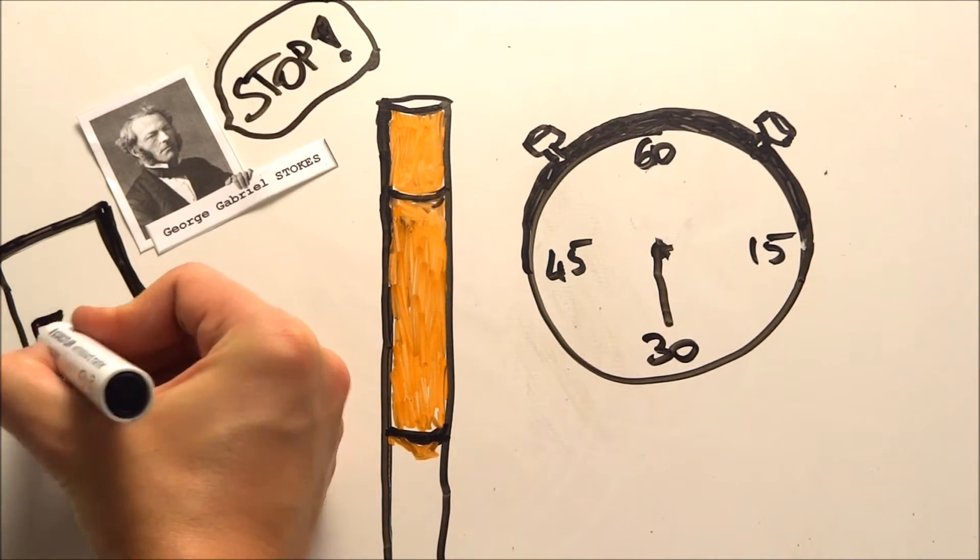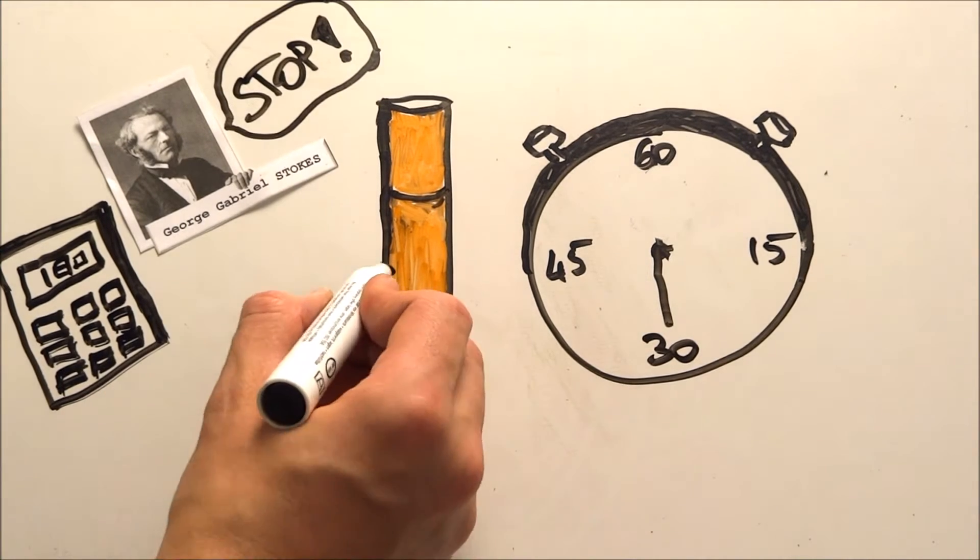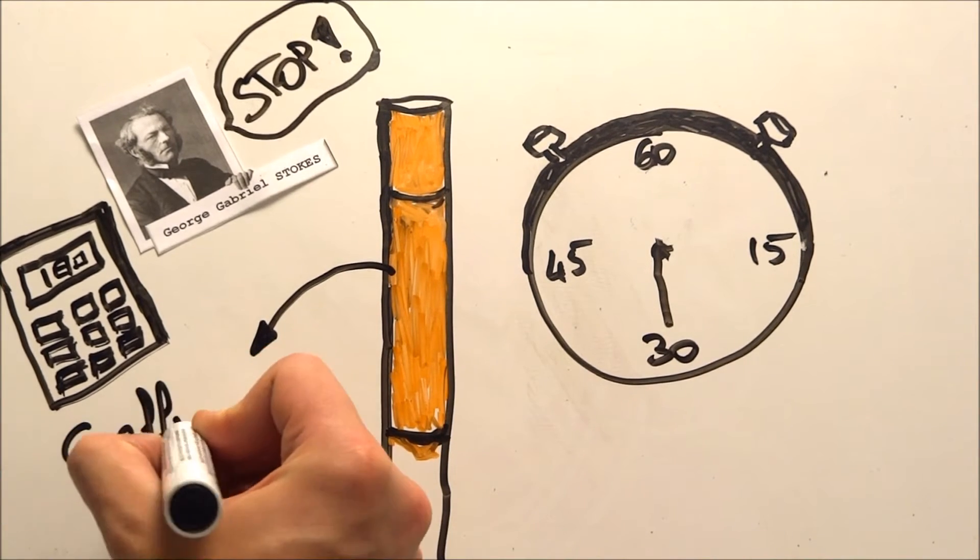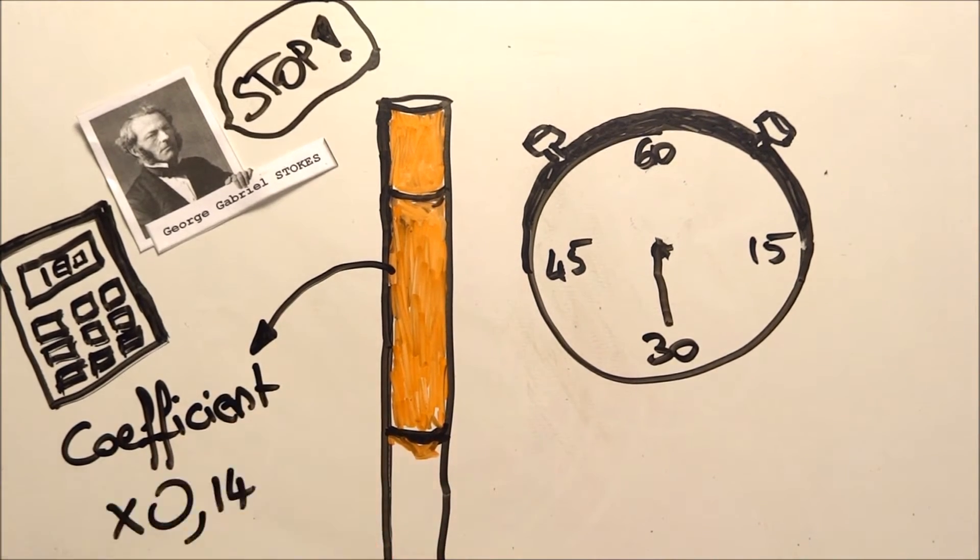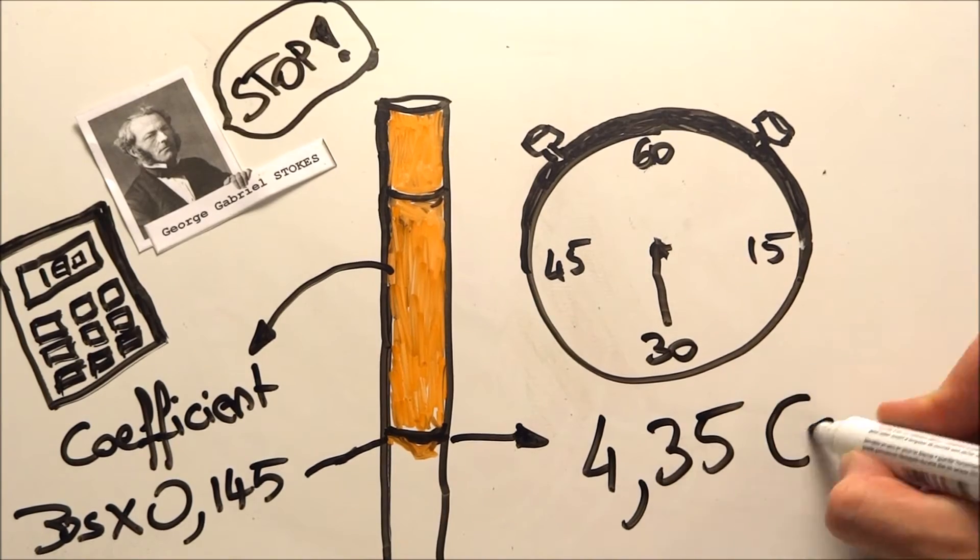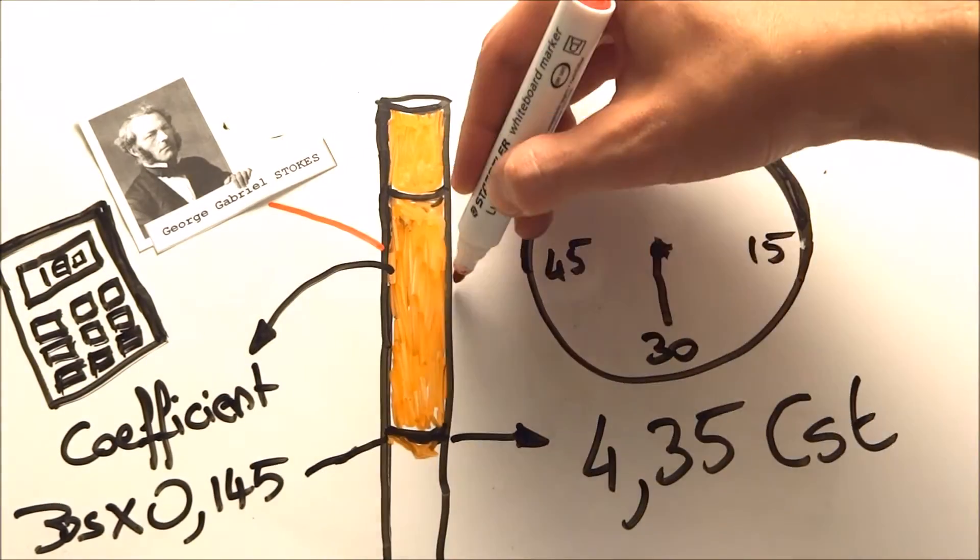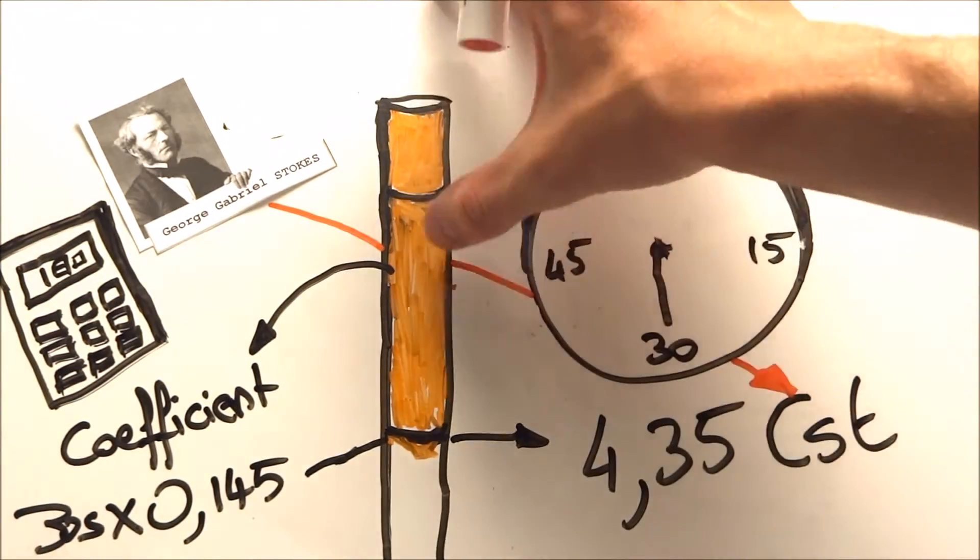And because for fluids with a really high viscosity like honey, it is better to use a larger tube, so the time between the two marks is not too long, each tube has a coefficient. And the trick is, if we multiply this coefficient by the time measured, it gives the viscosity in centi-stokes. The unit comes of course from George Gabriel Stokes.